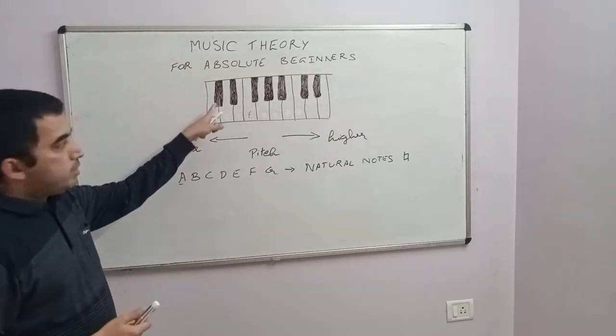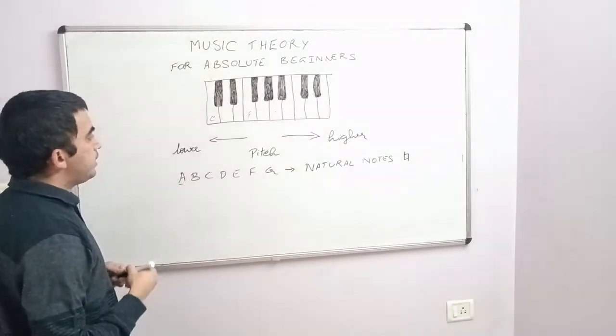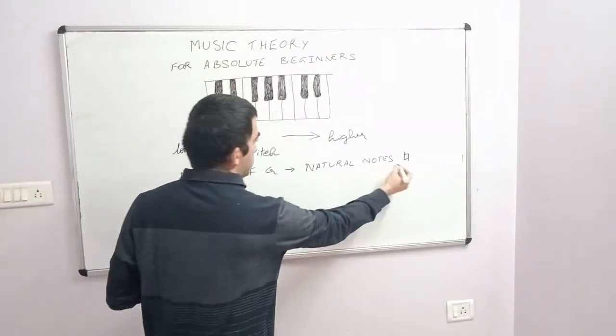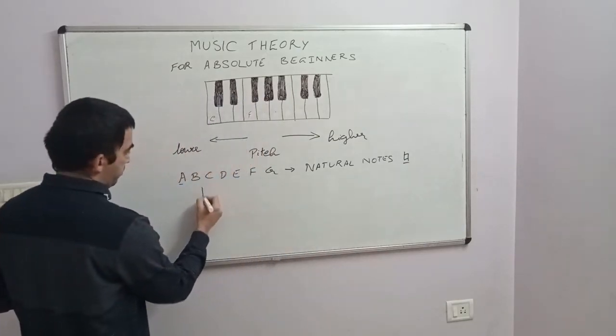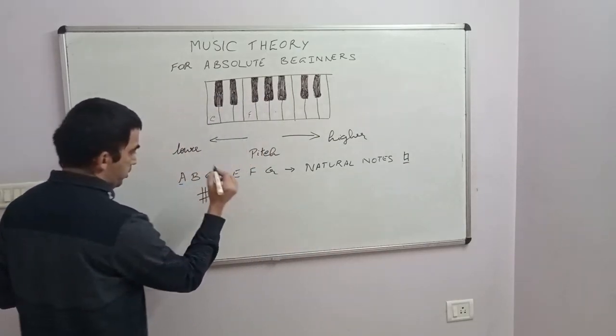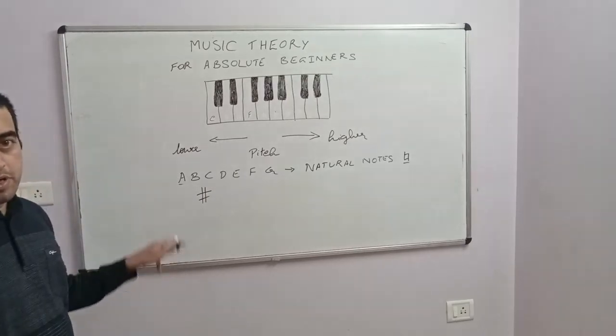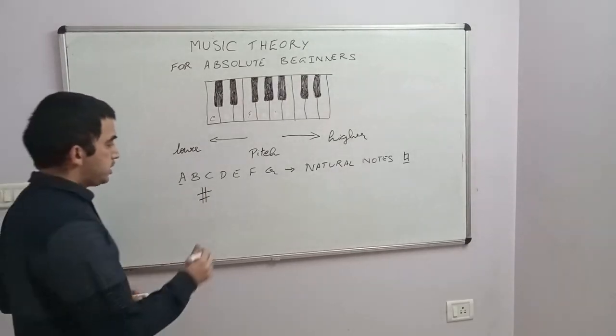Next, we will learn how to name the black keys. Just like how you have the natural symbol, you have a symbol called a sharp, popularly known as a hash. This is a sharp.